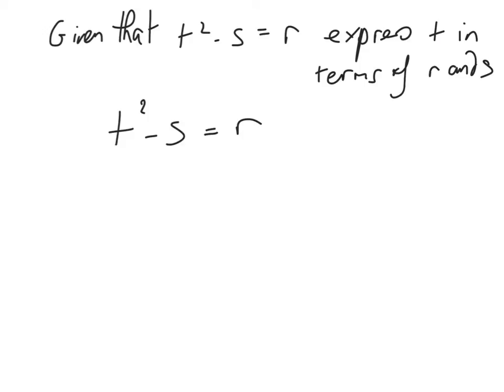Okay, let's have a look at another exam question. Given that t squared minus s is equal to r, express t in terms of r and s. So this time we want to get rid of the square.